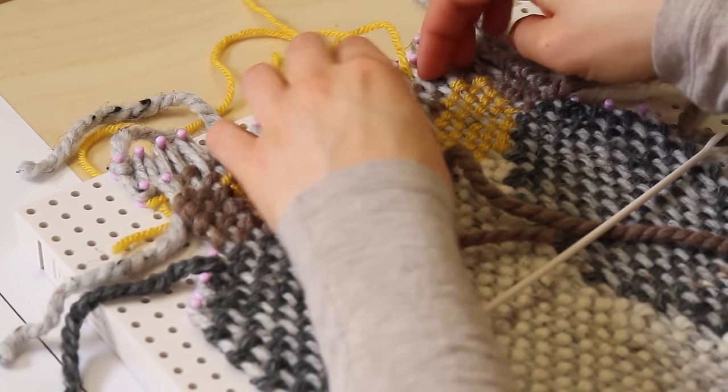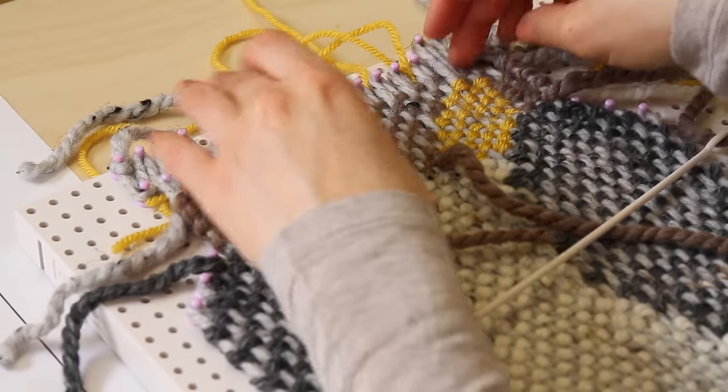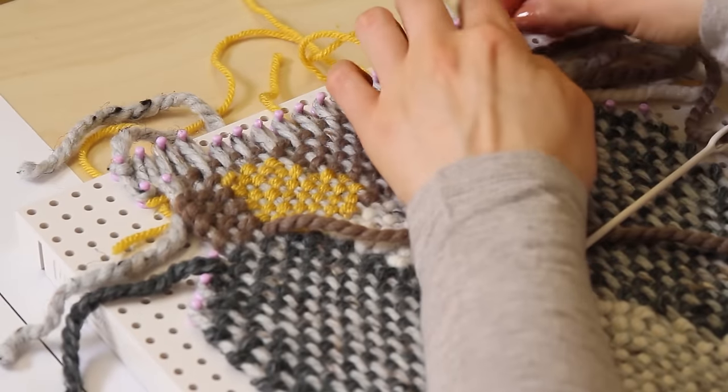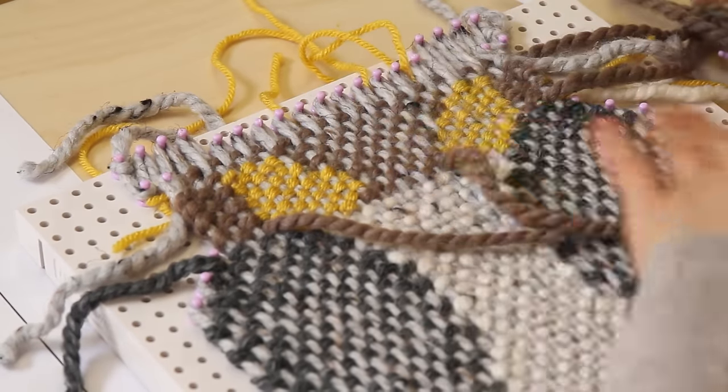When you are close to the top, just use your fingers to lightly press down your weft. Be sure to keep your warp strings on the pegs.